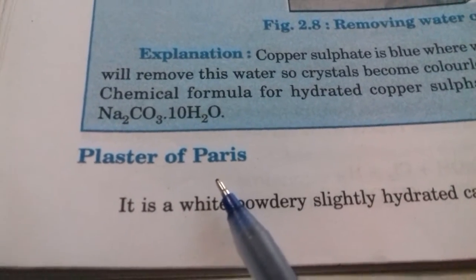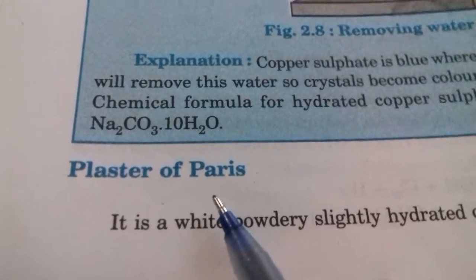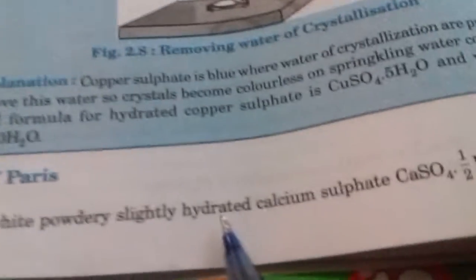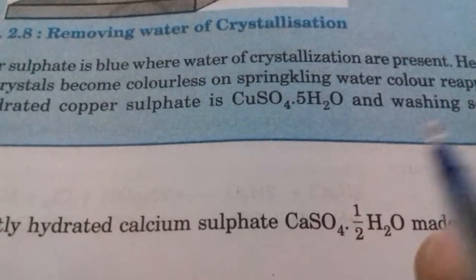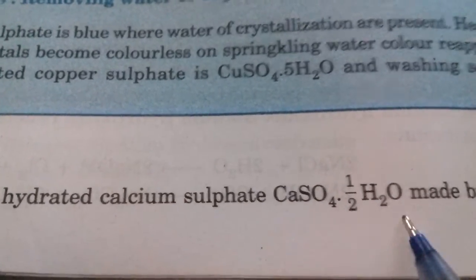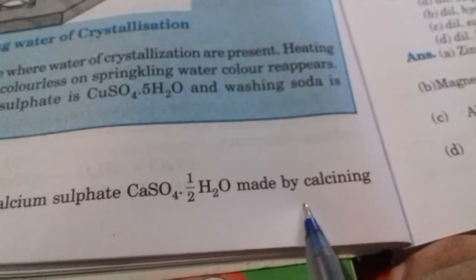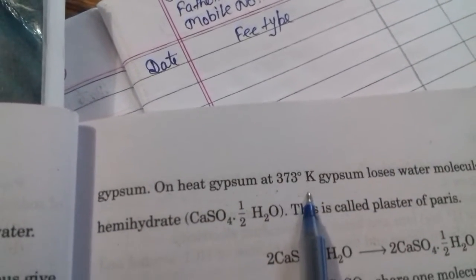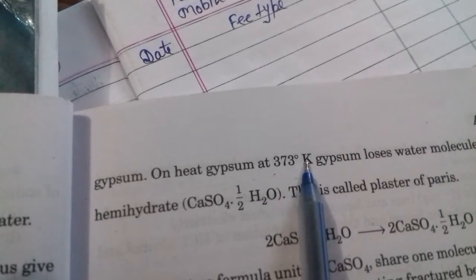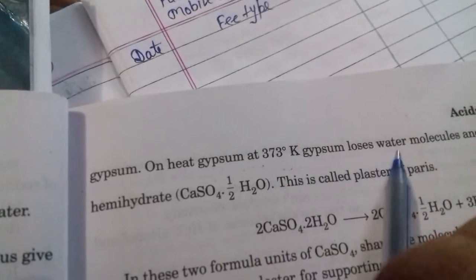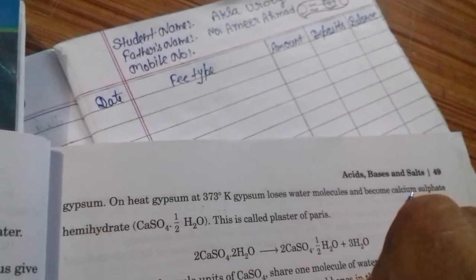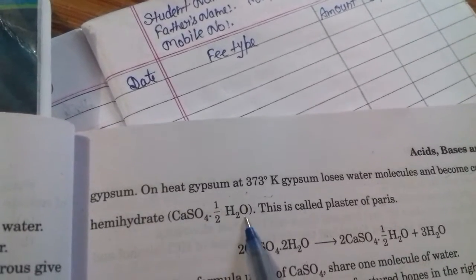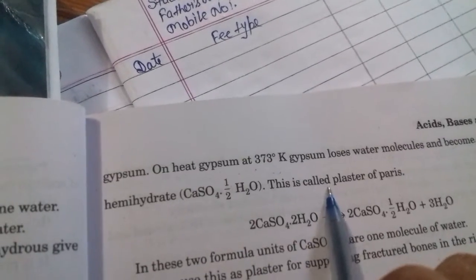We will cover its method of preparation and chemical formula. Plaster of Paris is a white powdery, slightly hydrated calcium sulfate. Its chemical formula is CaSO4·½H2O. It is made by calcining gypsum. On heating gypsum at 373 Kelvin, gypsum loses water molecules and becomes calcium sulfate hemihydrate — CaSO4·½H2O — which is called Plaster of Paris.